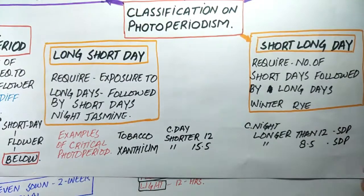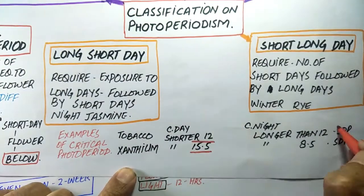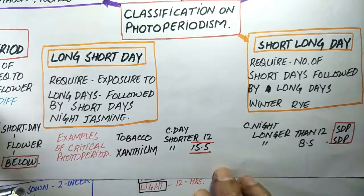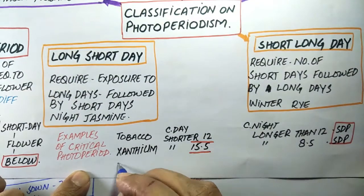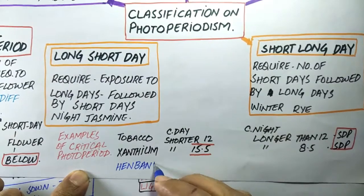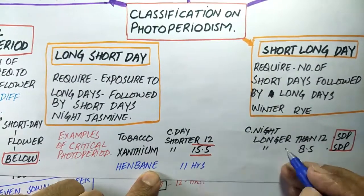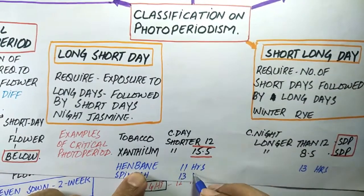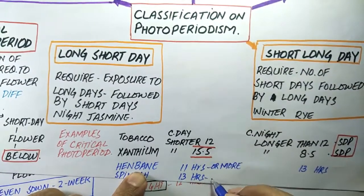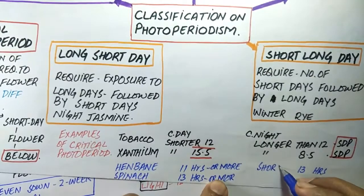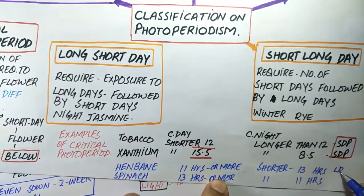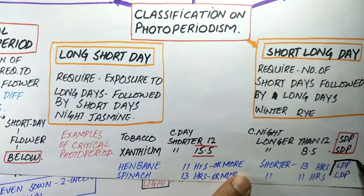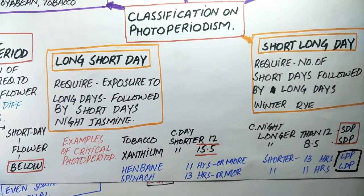Xanthium, a short day plant, also requires a photoperiod shorter than 15.5 hours. Whereas henbane, a long day plant, has a critical day length of 11 hours. It means it requires a minimum light duration of 11 hours or more — it flowers at 13 hours, 14 hours, 15 hours, or even 20 hours of day length — but it will never flower below the 11-hour critical day length.